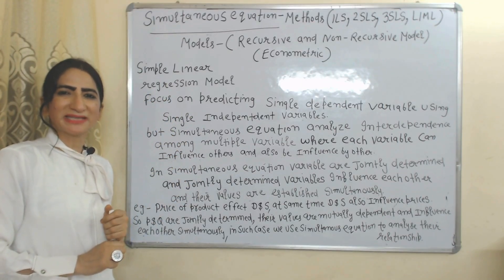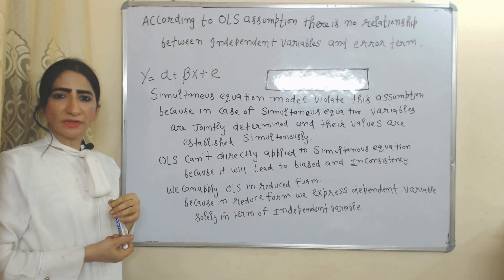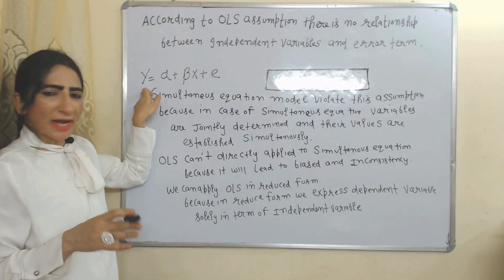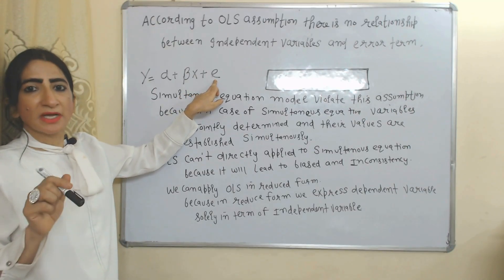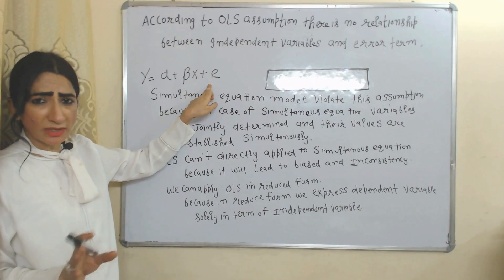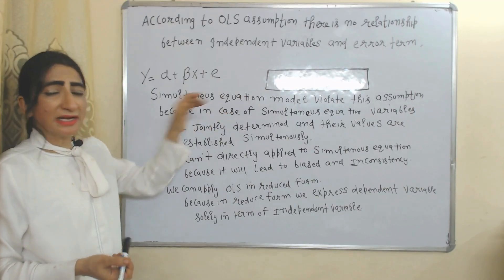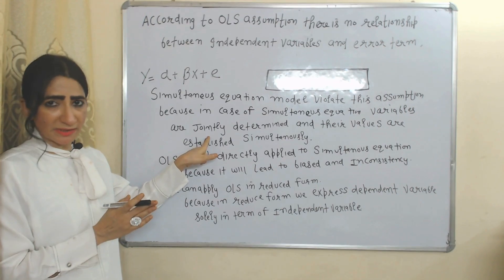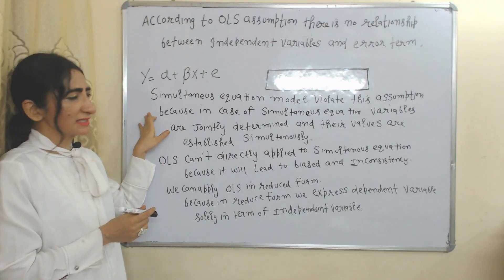We have already discussed the Ordinary Least Squares (OLS) method. According to the OLS assumption, there is no relationship between the independent variable X and the error term E. But simultaneous equations violate this assumption, because in simultaneous equations variables are jointly determined and their values are established simultaneously.